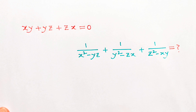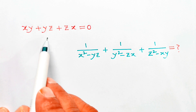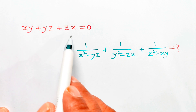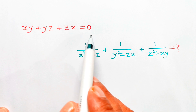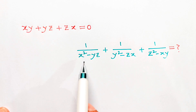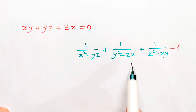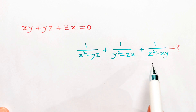Hello everyone. In this video we have been given xy plus yz plus zx equal to 0. Now we are going to find the value of 1 divided by x squared minus yz, plus 1 divided by y squared minus zx, plus 1 divided by z squared minus xy.